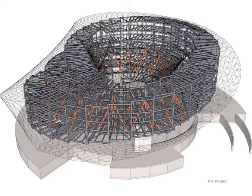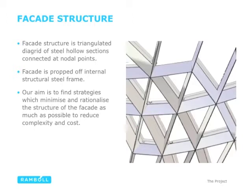The facade structure is undergoing a few changes and may be rationalized slightly, but we're going to base this optimization investigation upon the current scheme, which is a triangulated diagrid that is highly complex. Bear in mind the Mobius geometry — so we want to find the most rational, cheapest solution possible.